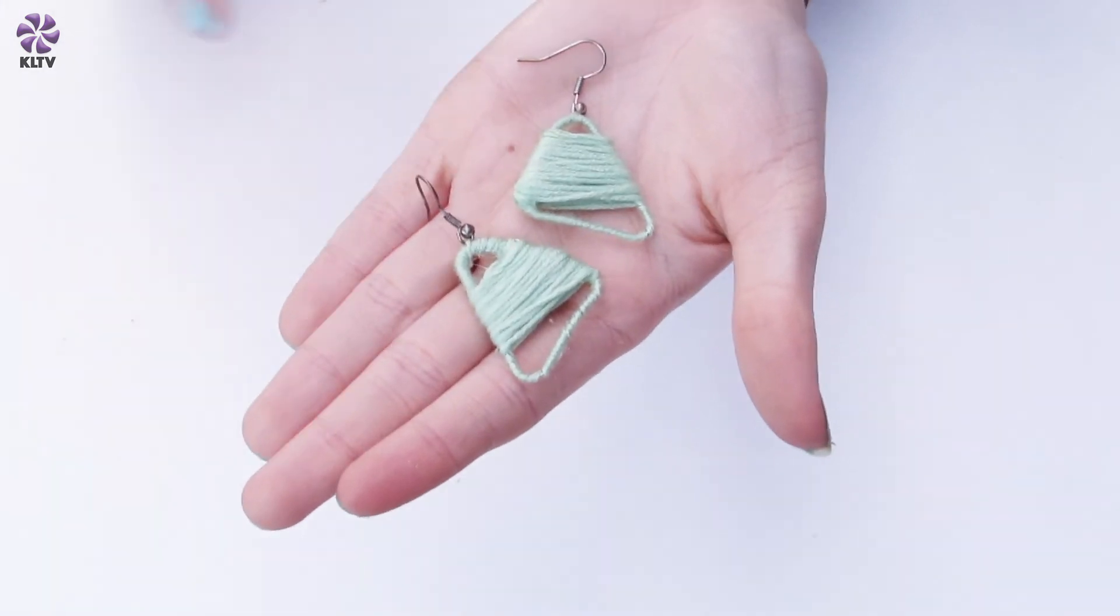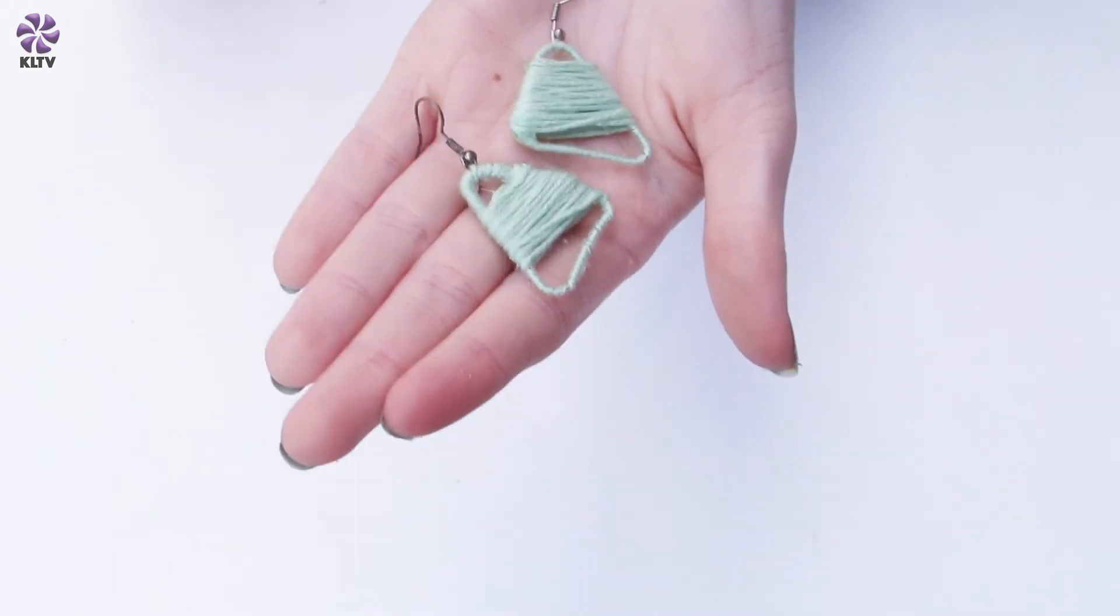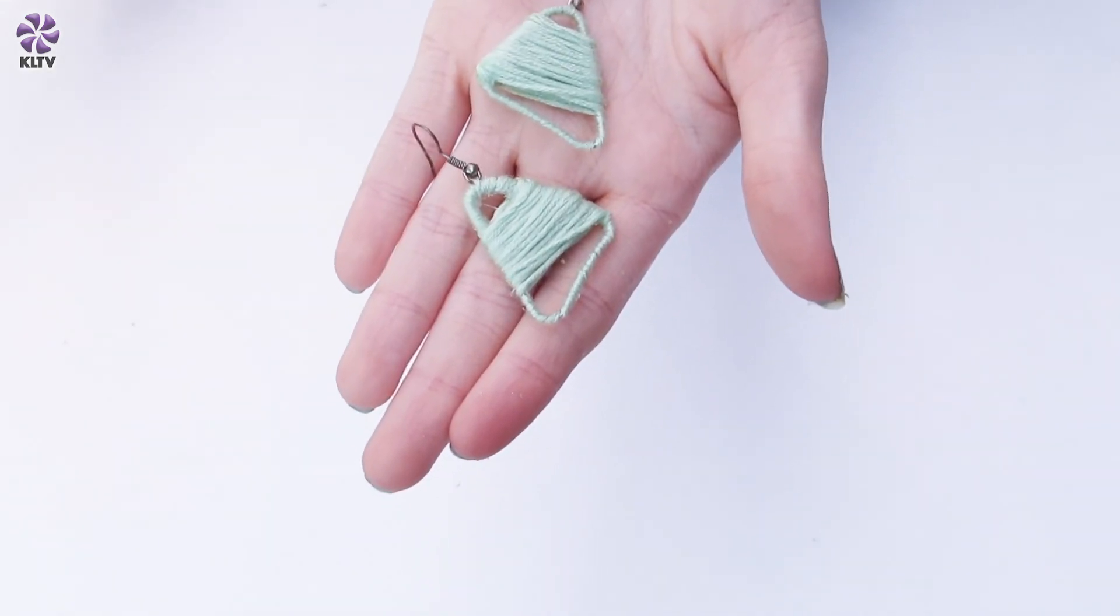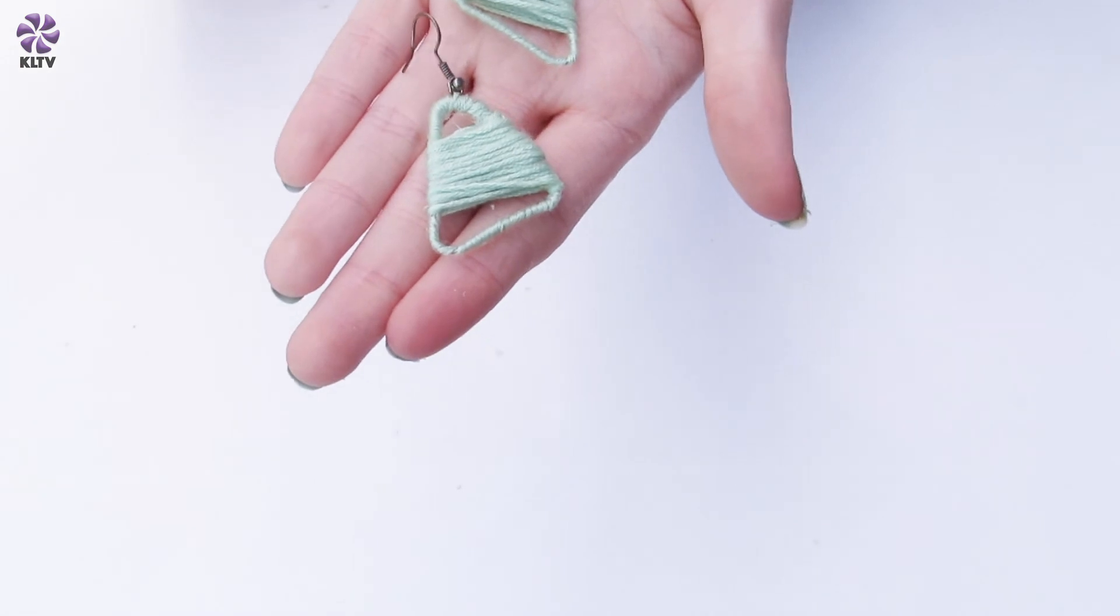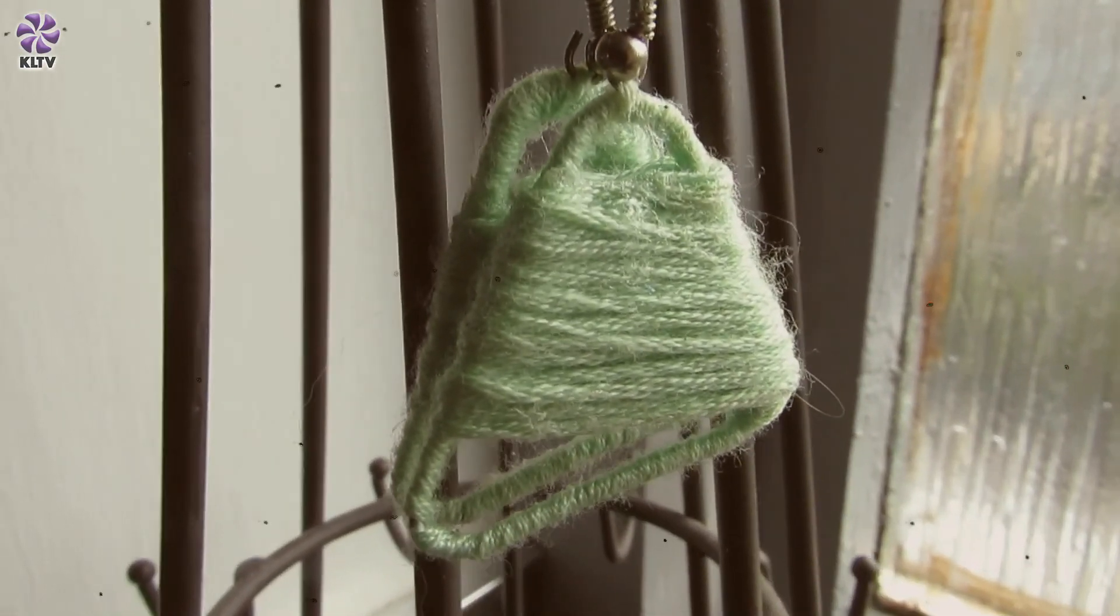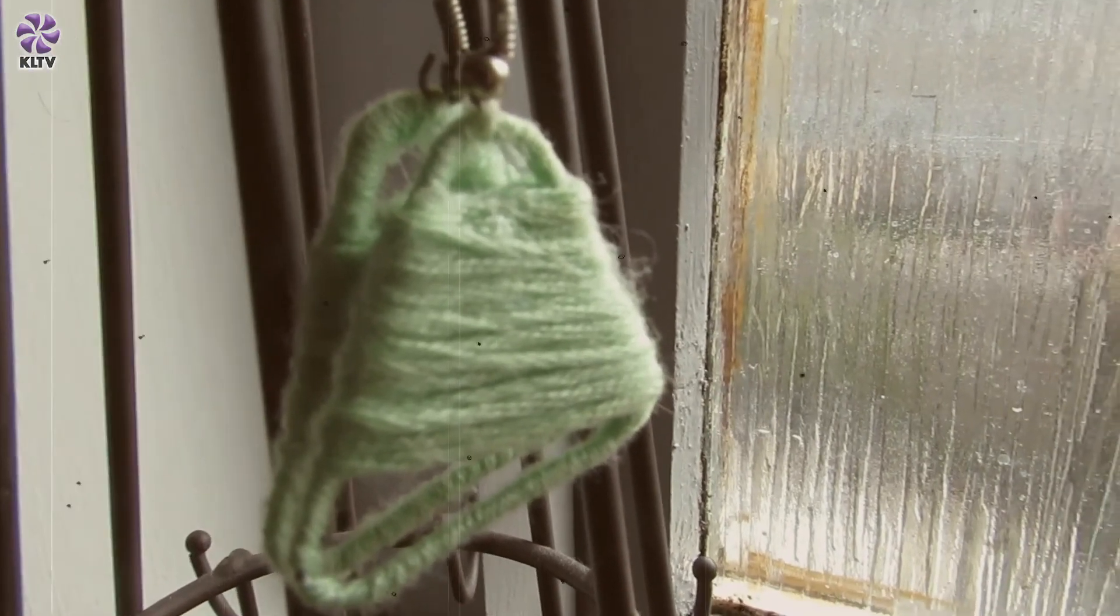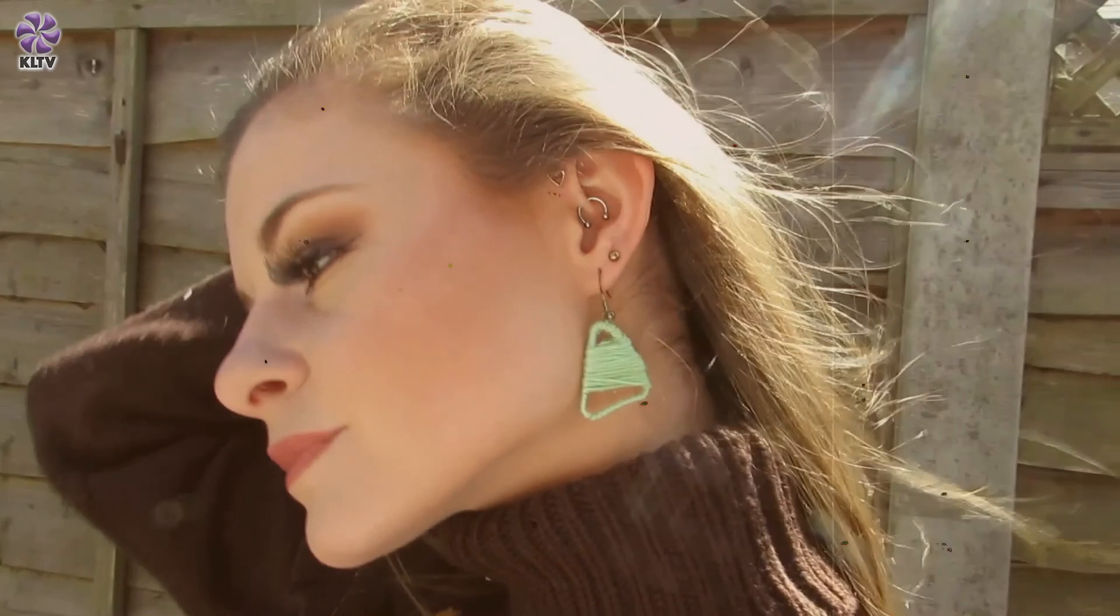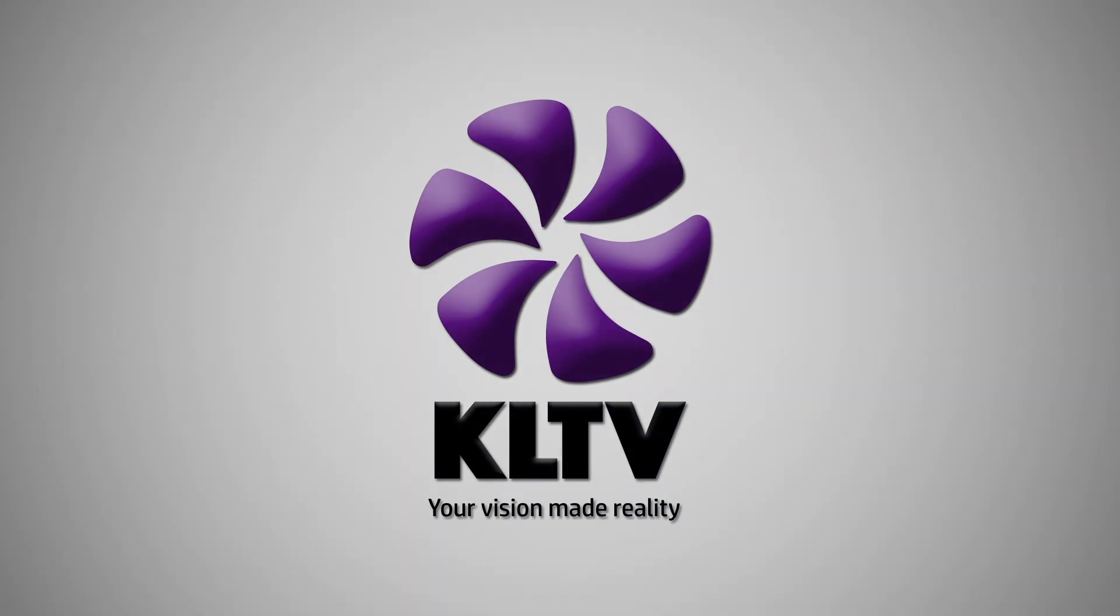So there we go, that's our triangular shape earrings all complete. I think they look fantastic and super stylish. They only took a few simple steps, just simply wrapping the embroidery thread around our reshaped paper clips and then simply attaching them onto our earring hoops. We'll see you next time.